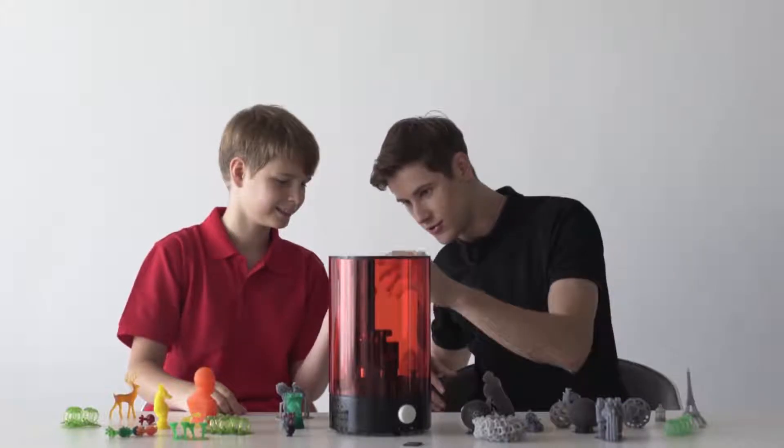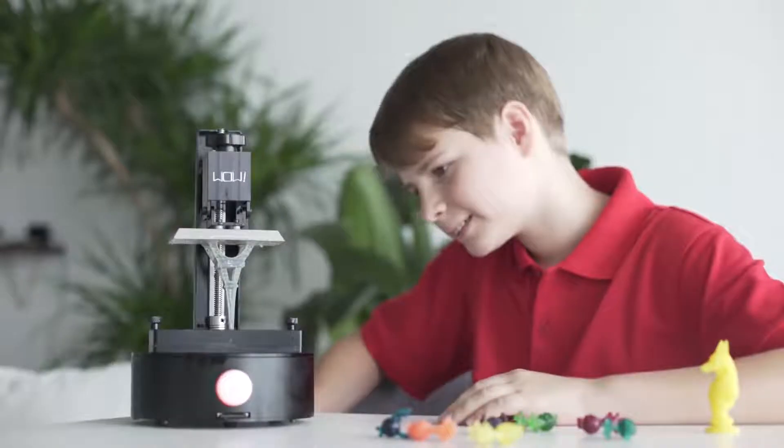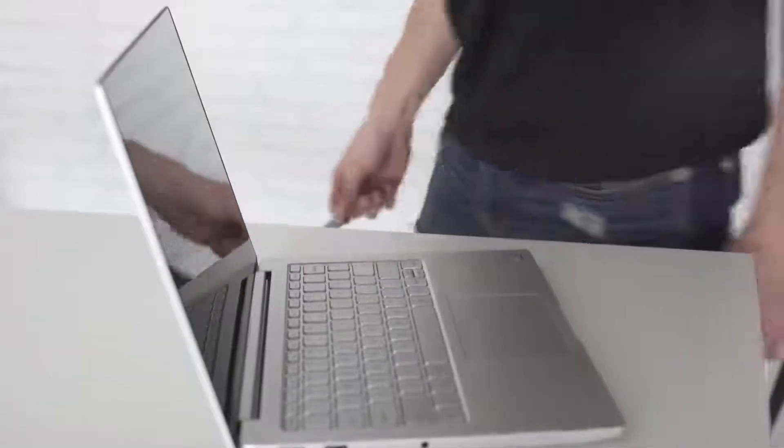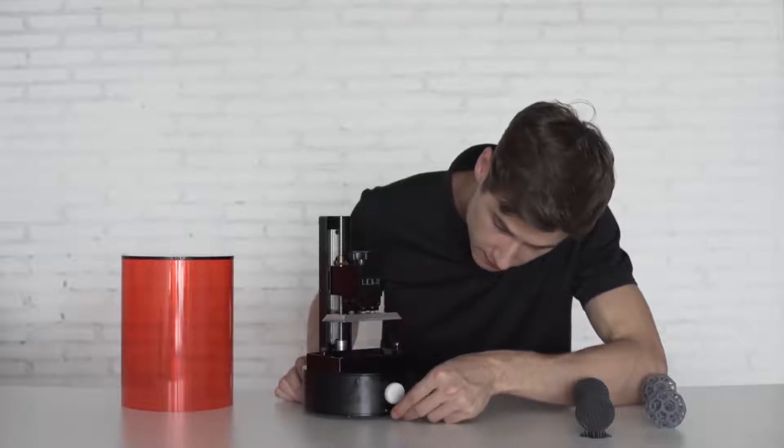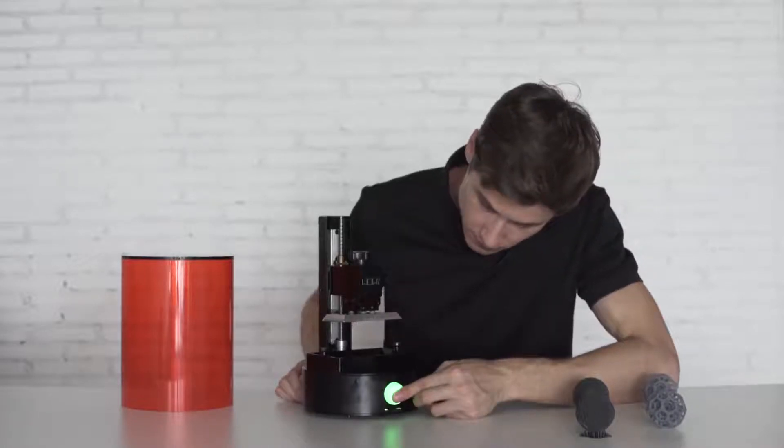SparkMaker is designed as a plug-and-play standalone printer. Starting to print is super easy. Just download the design file from computer to an SD card, insert it to SparkMaker with resin filled, press the button and you are all set.